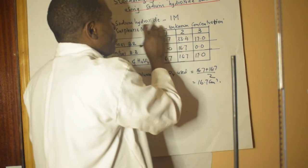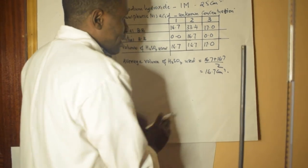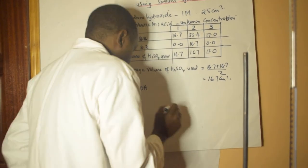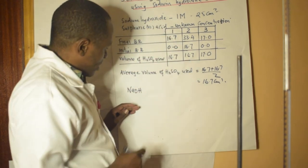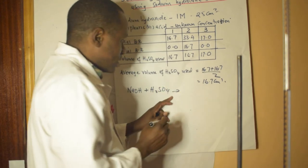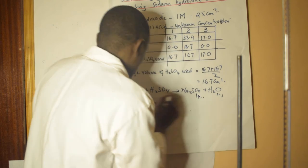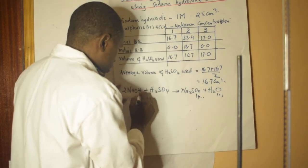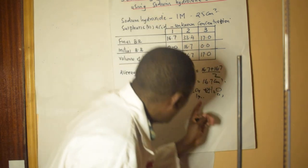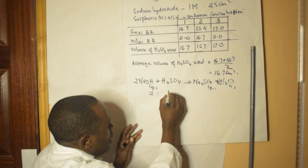Now let's see how — having gotten the volume — remember, sodium hydroxide: I pipetted 25 cubic centimeters. How do I work out the concentration of sulfuric acid? I'm going to use stoichiometry. The equation is: 2NaOH + H₂SO₄ → Na₂SO₄ + 2H₂O. Balancing: two sodiums, then hydrogens balance to give two water molecules.